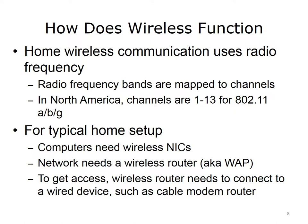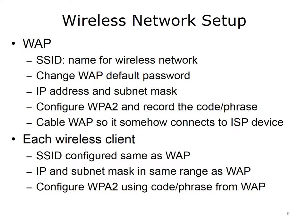The network also needs a wireless router. The wireless router then connects to a wired device. For example, to obtain internet access, the wireless router needs a wired connection to an ISP device, such as a cable modem router. When setting up a wireless network, it is very important that the WAP be configured for secure communication.